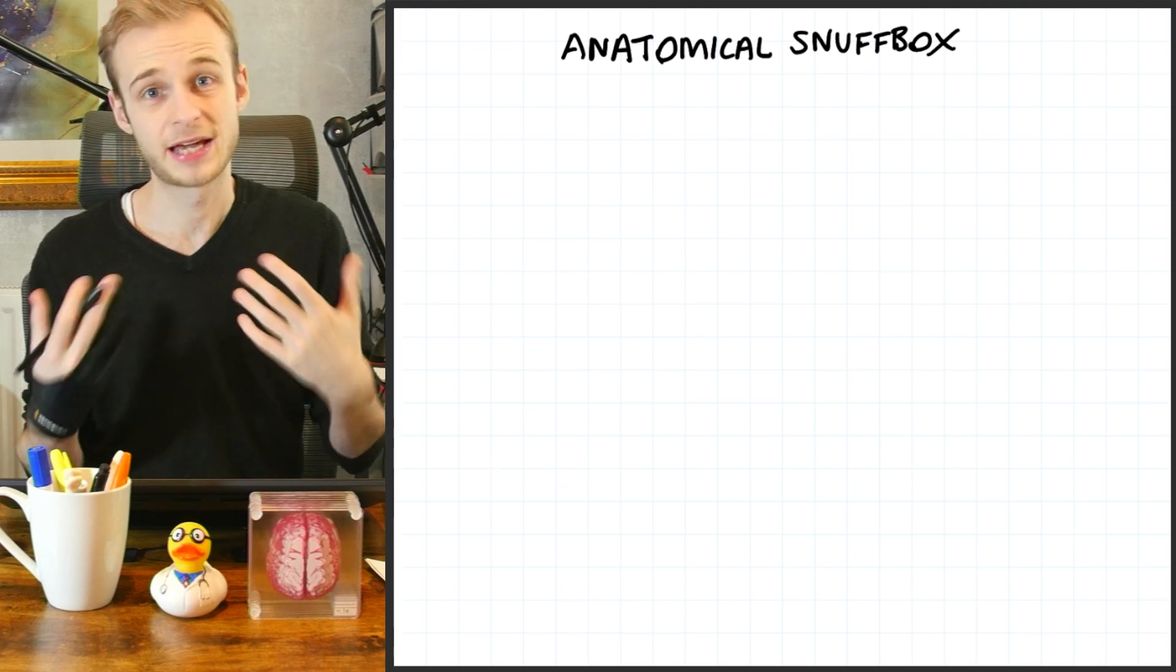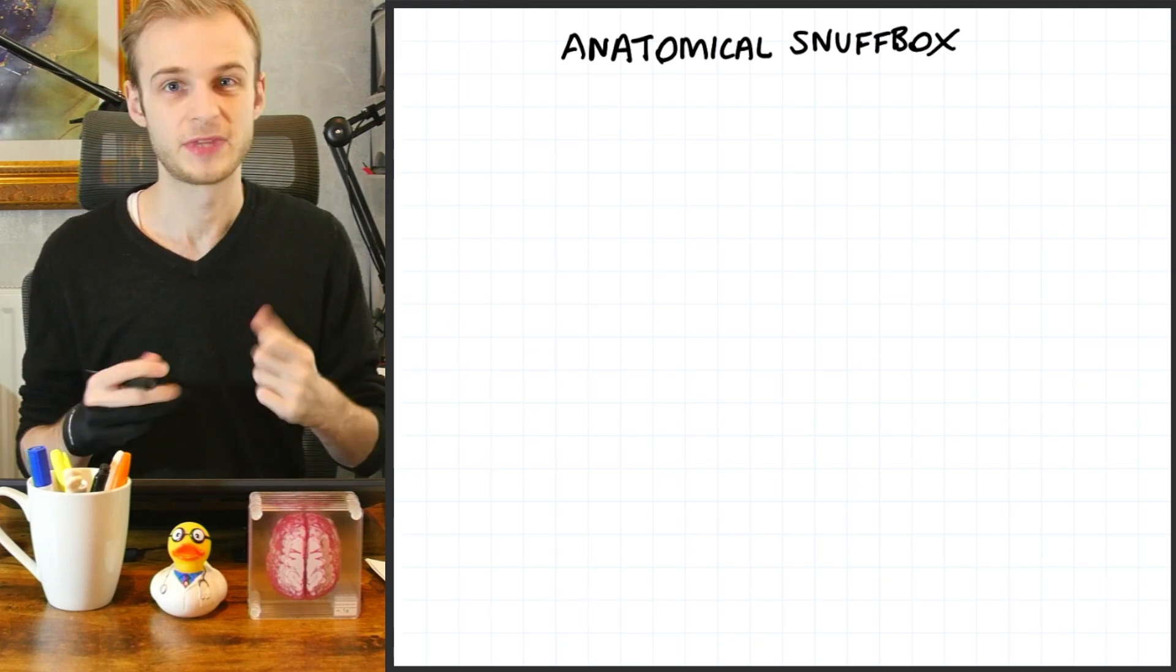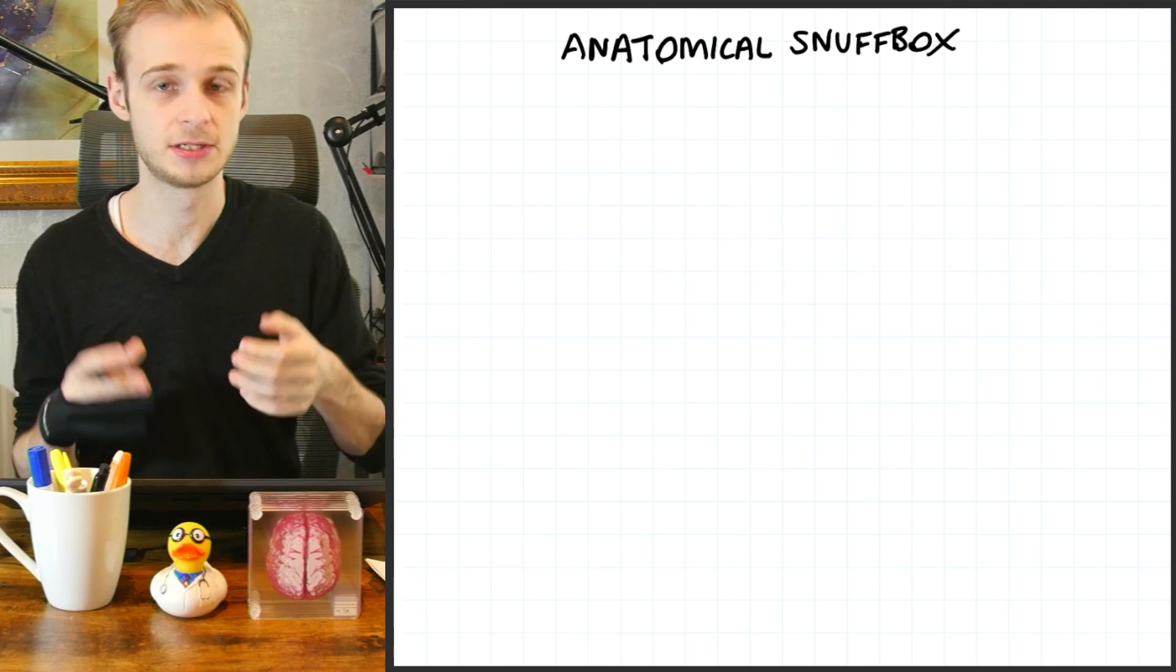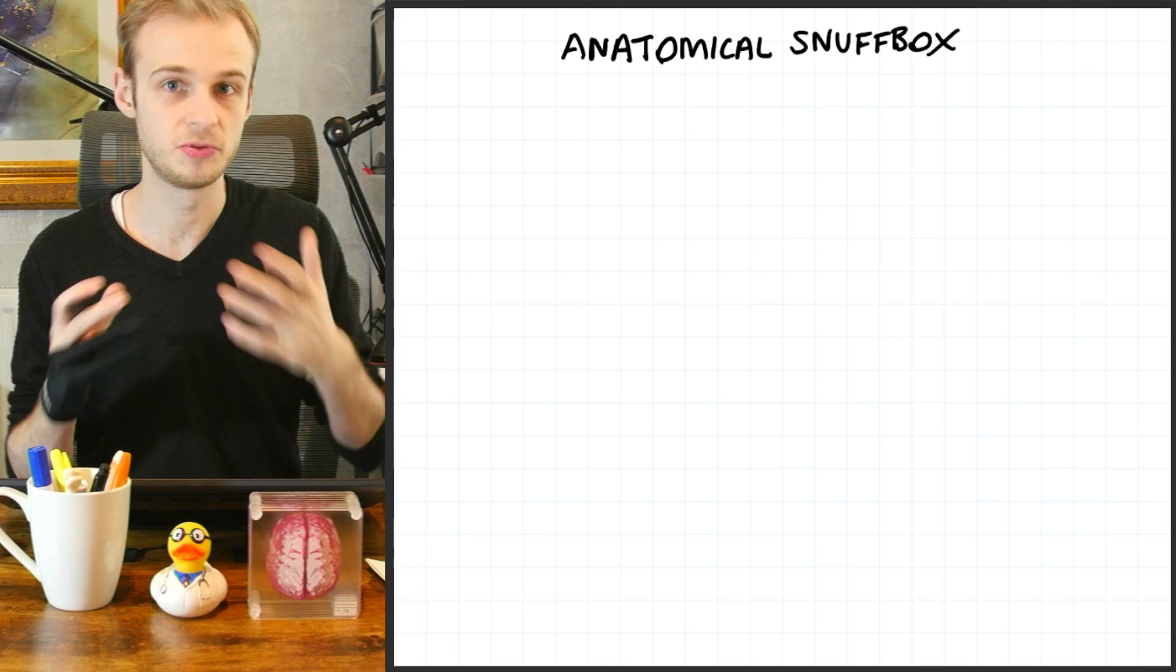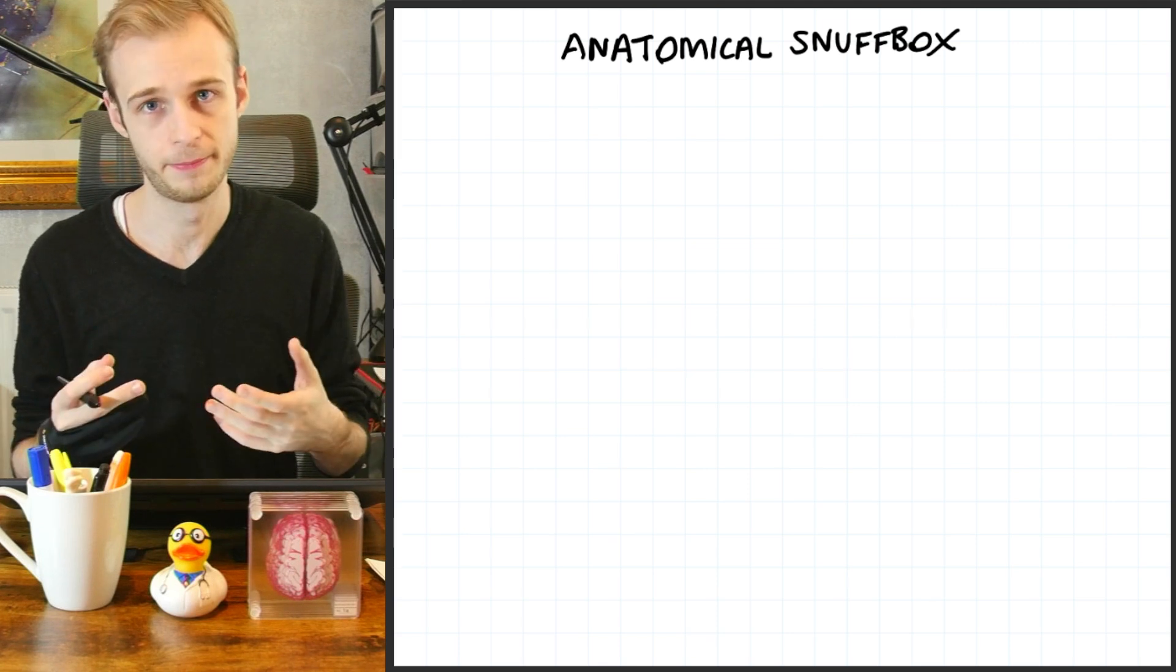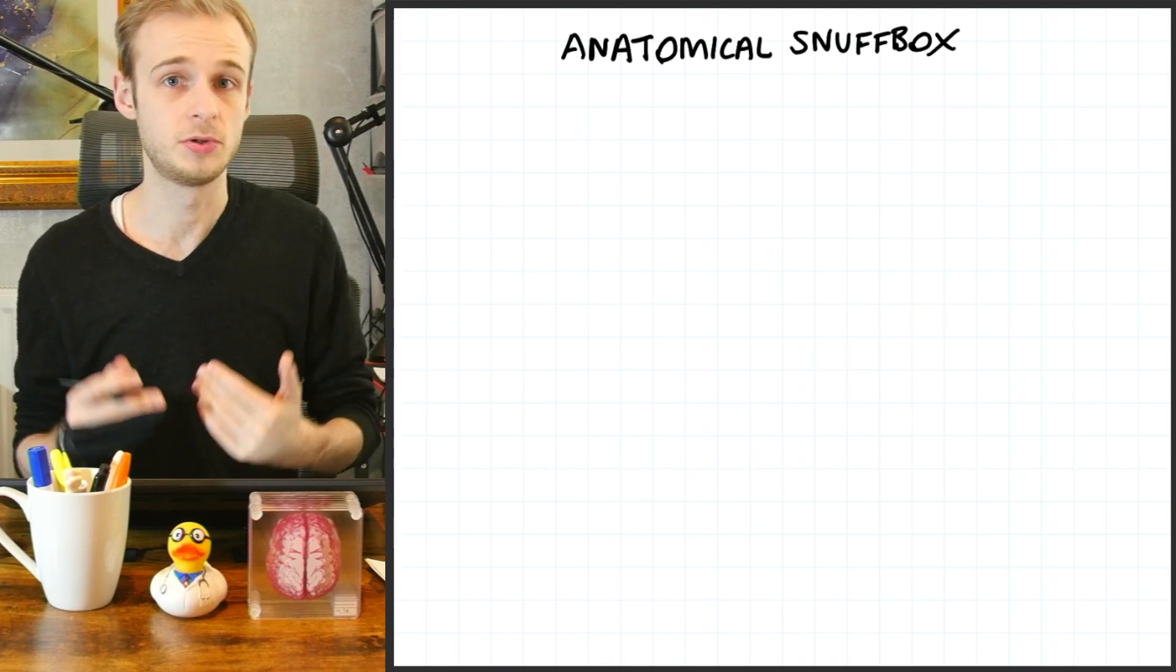Let's start by discussing what the anatomical snuff box actually is. In anatomical terms, it is a triangular shaped depression in the lateral dorsum, that is the outside superior surface of the thumb. Two of its borders being formed by two tendons.